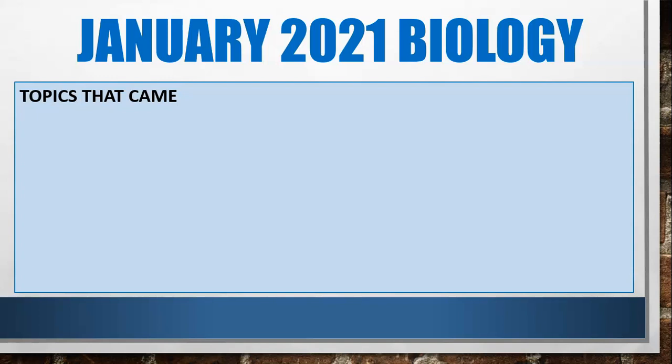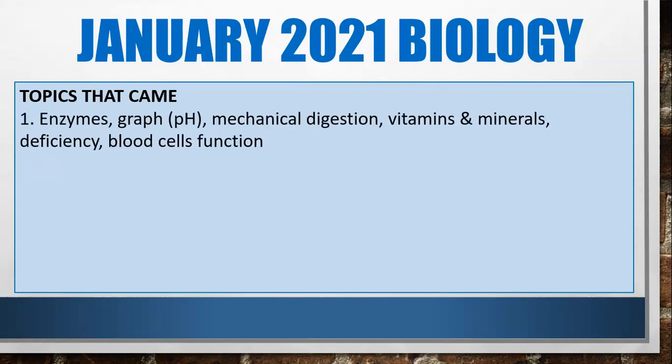Now let's look at the January 2021 biology paper. The first question was a popular one — enzymes and a graph showing the effect of pH on amylase, which is a common first question on paper two in biology exams. It went on to describing an experiment related to enzymes and the effect of pH, then mechanical digestion, vitamins and minerals, a table on deficiency diseases, and the functions of white blood cells and platelets.